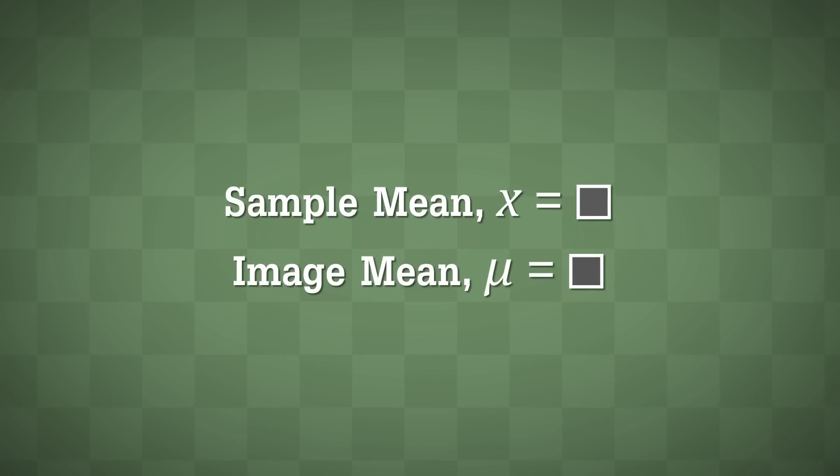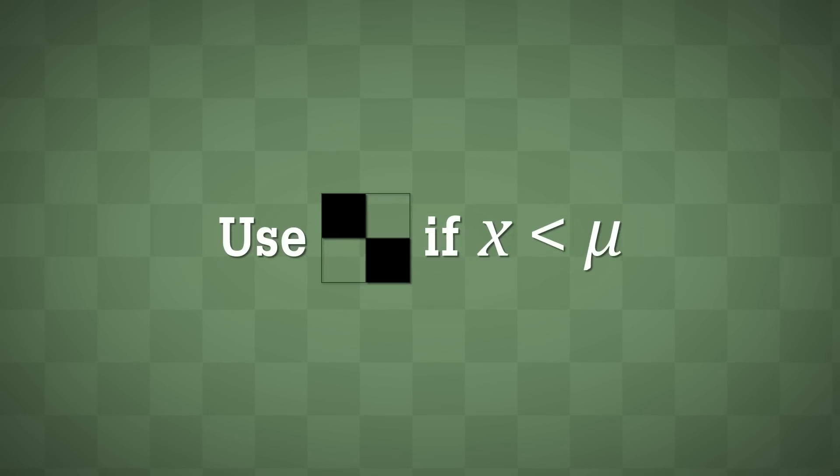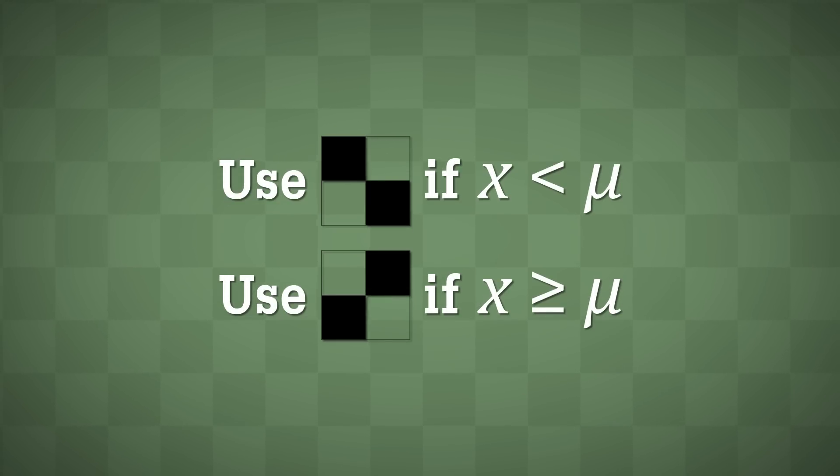If the sampled mean is less than the image mean, I use this pattern, and if the sampled mean is greater than the image mean, I use this pattern. I continue with more sets of 50 random pixels until I have generated the master share.